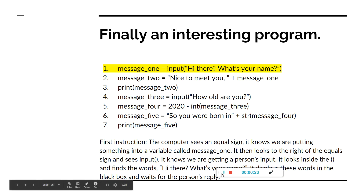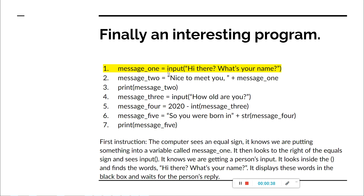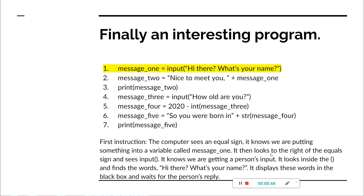The first instruction — I'll run through the slides first and then I'll do the drawing/visualizing thing. So the computer sees an equal sign; it knows we're putting something into a variable called message one. It then looks to the right of the equal sign and sees 'input' — it knows we're getting a person's input. It looks inside the brackets and finds the words 'hi there, what's your name', displays these words in the black box, and waits for the person's reply.